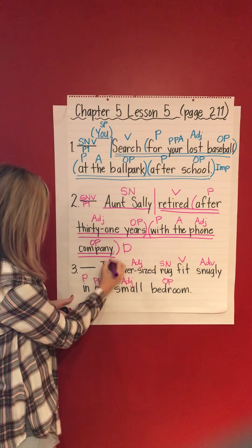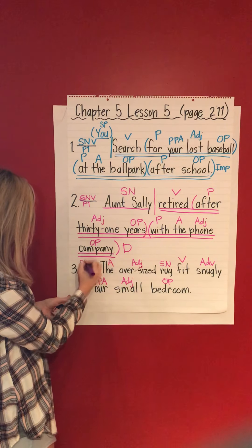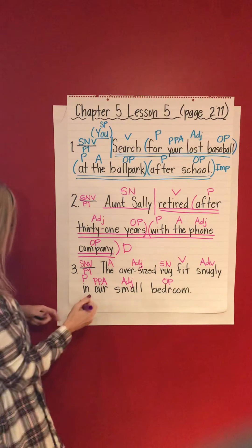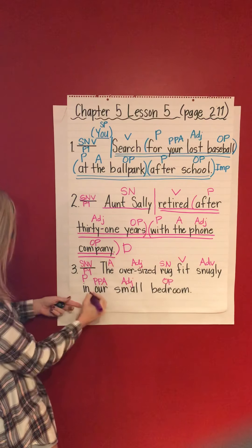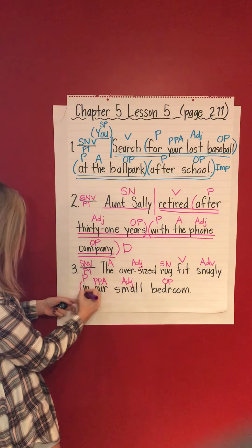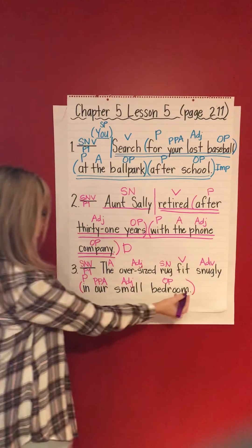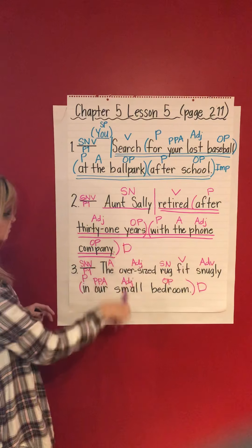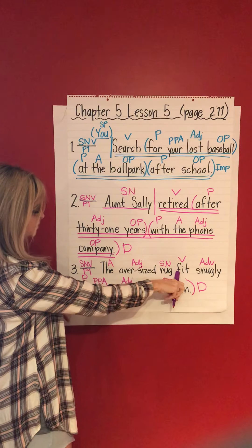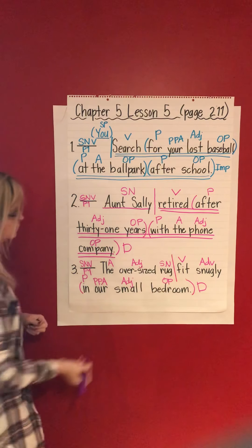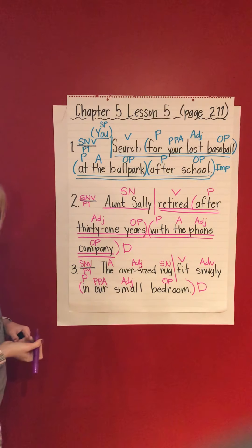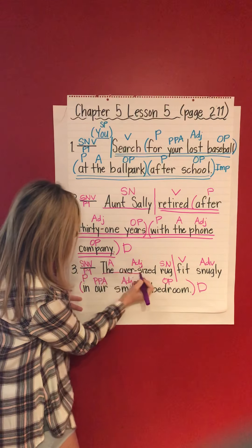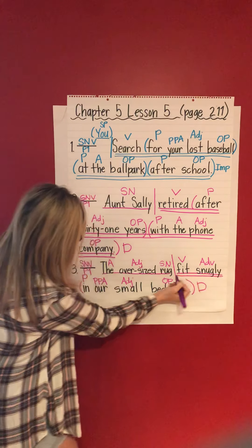'The' — article adjective. Subject, noun, verb — pattern 1. Skill check: prepositional phrases — there's only one: 'in our small bedroom.' Period, statement, declarative sentence. Go back to the verb, which is right here because we labeled it. Divide the complete subject from the complete predicate. Underline the complete subject once and the complete predicate twice.